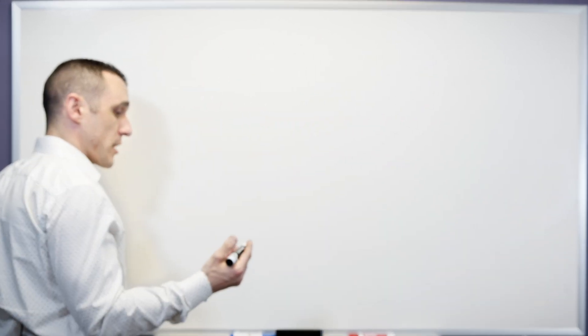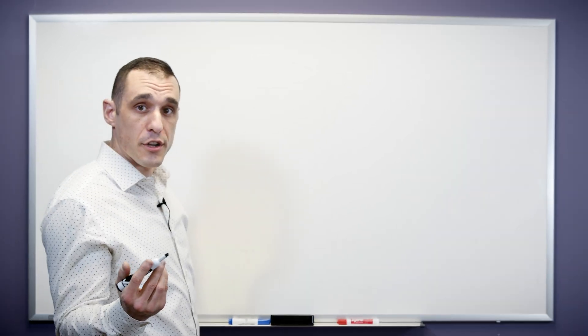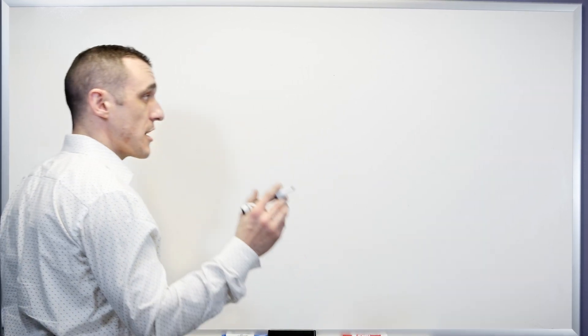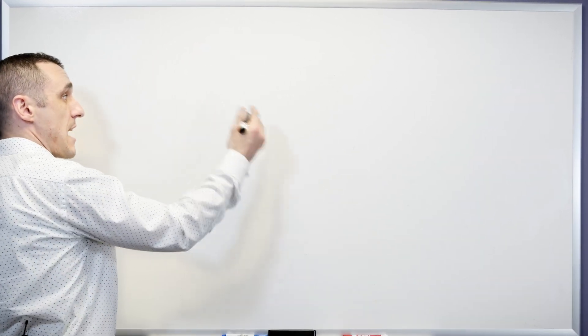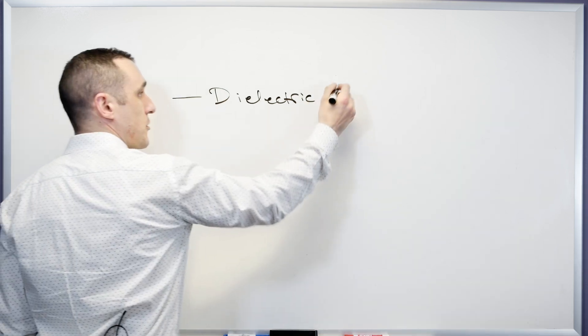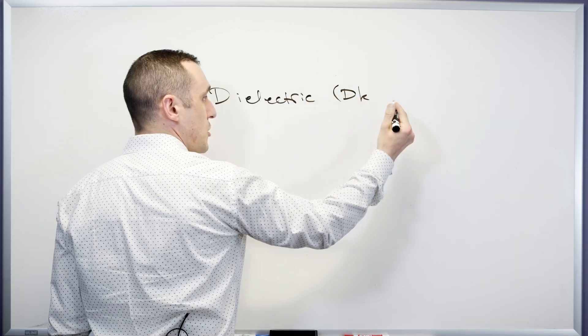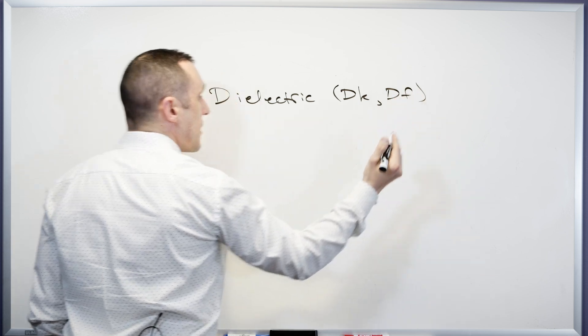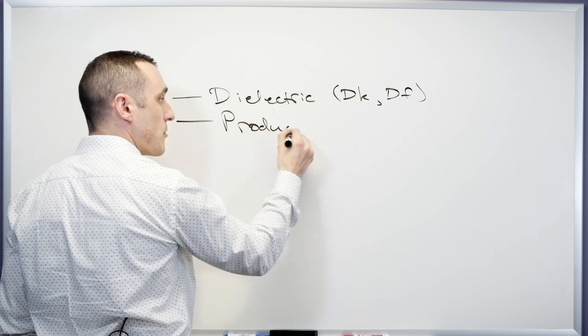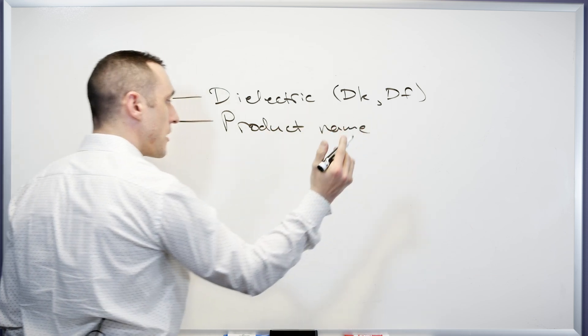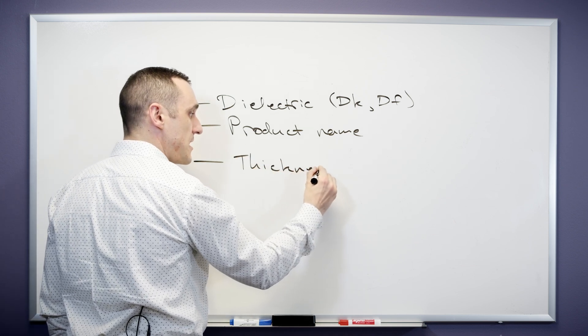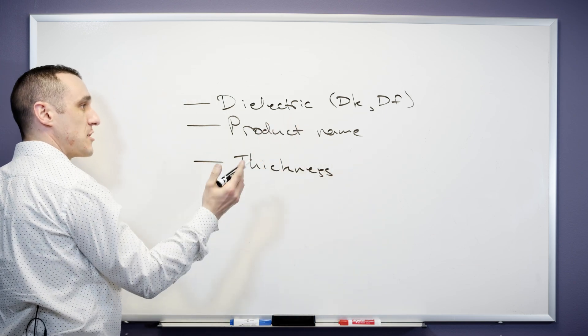In controlled dielectric, essentially what you as the designer are doing is you are specifying everything that has to go into the stack-up. When I say you're specifying everything, we of course want to specify the dielectric constant. So that's the first piece. This would be the DK value in the data sheet as well as the DF value. The other thing we could do is specify a product name for our materials that appear on each layer and then we specify a thickness.